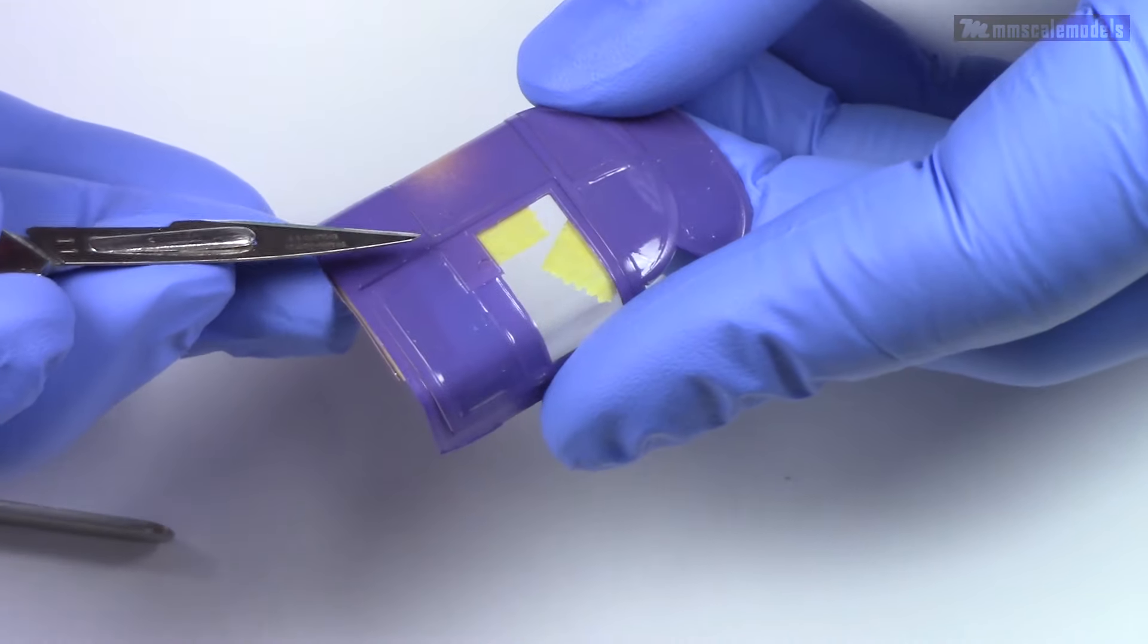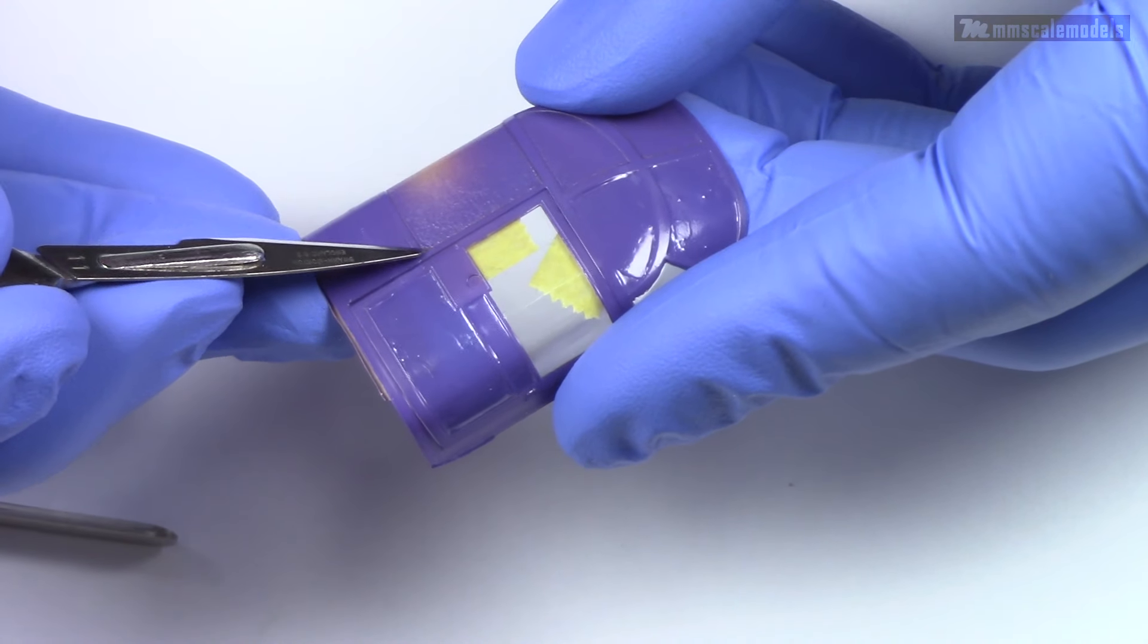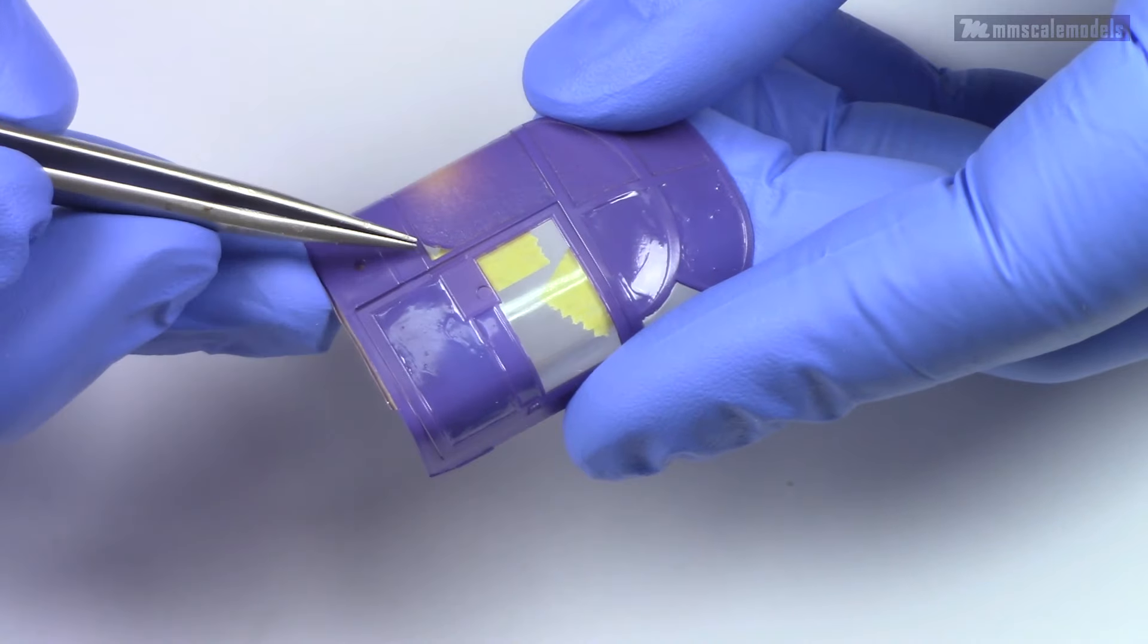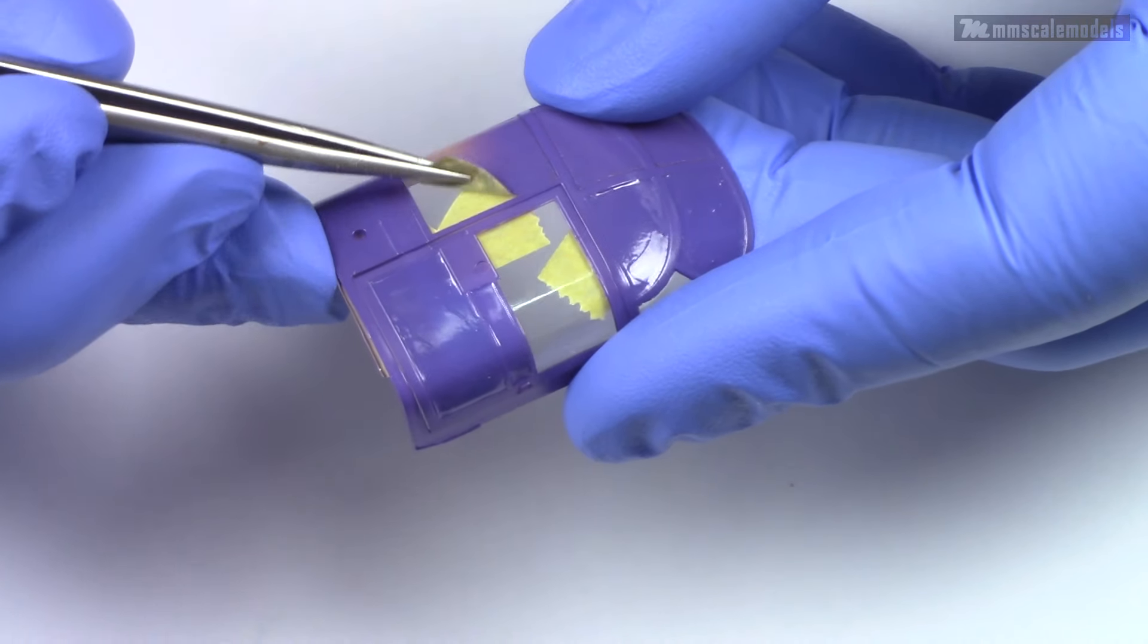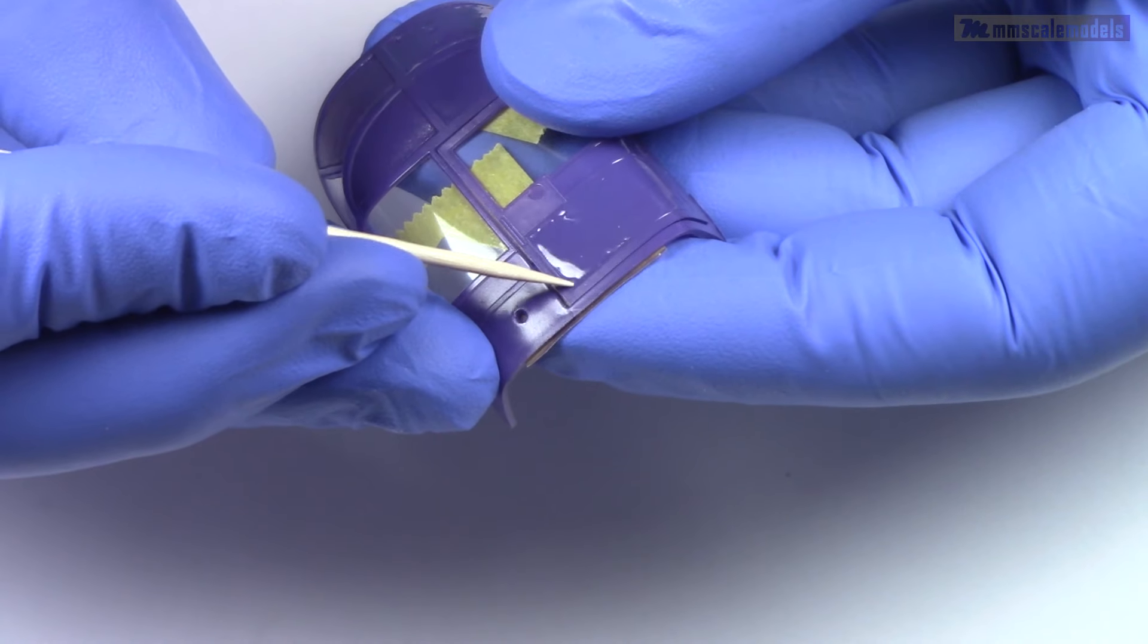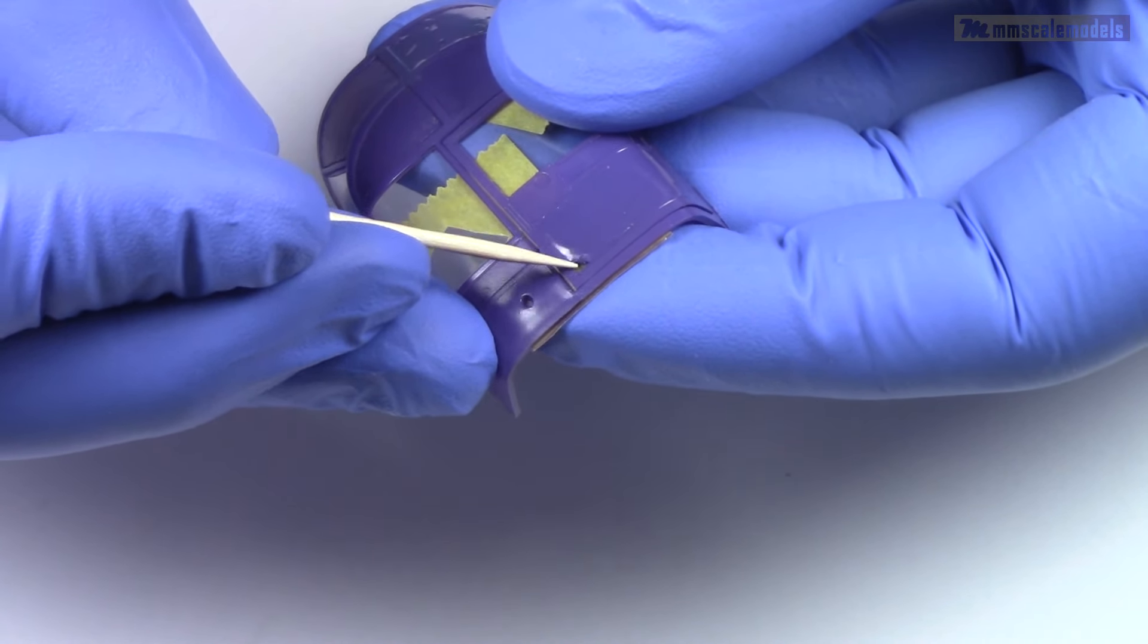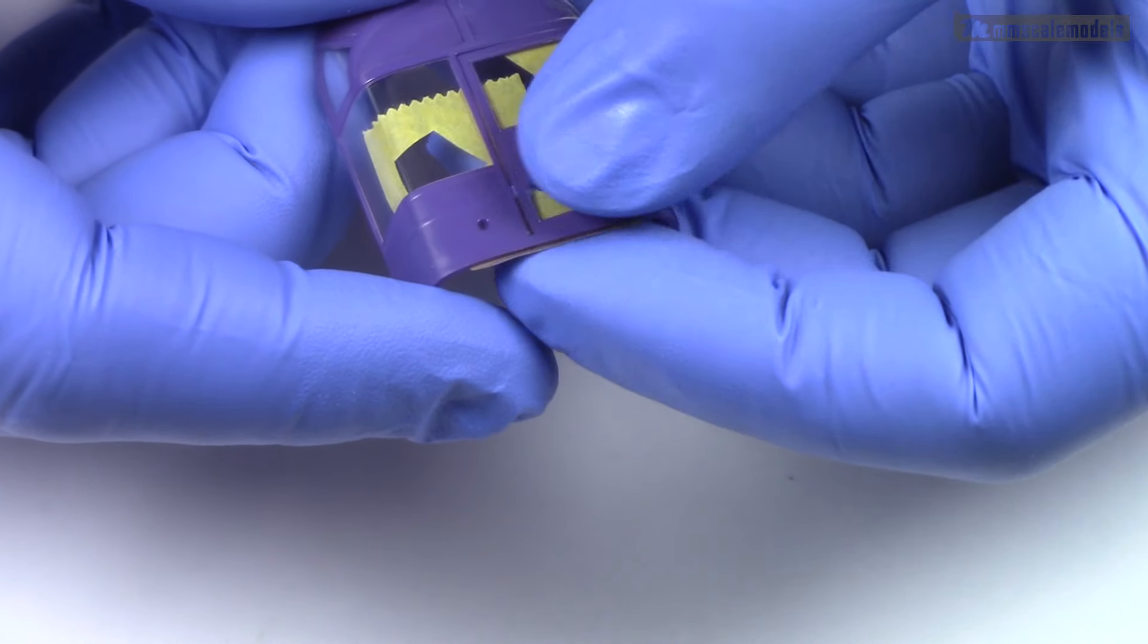Removing the masks is pretty straightforward. Lift and peel type of action for the tape side. For the masking fluid I used a toothpick to get it started, and then remove the rest with my finger.